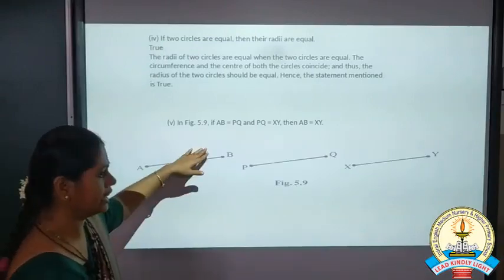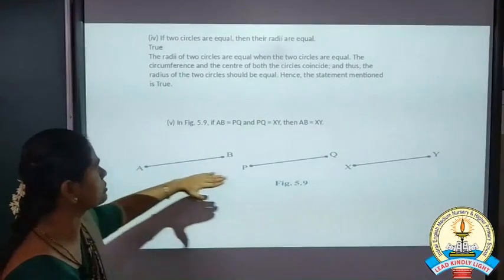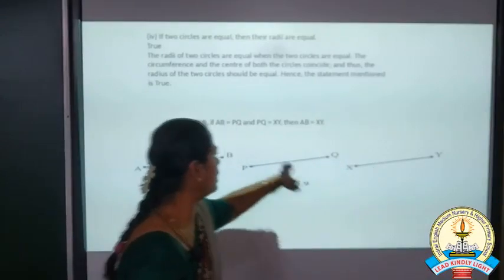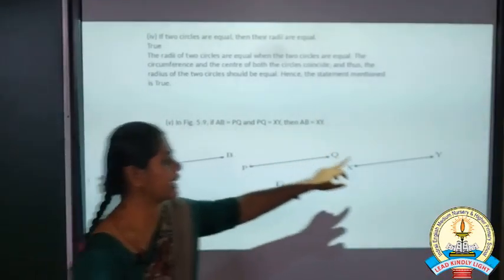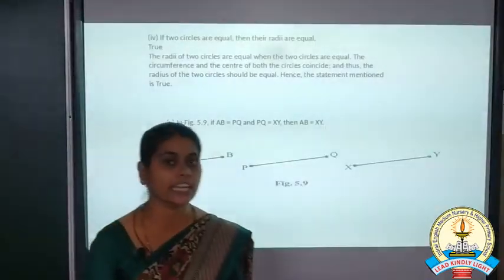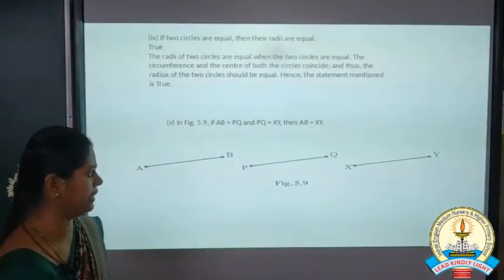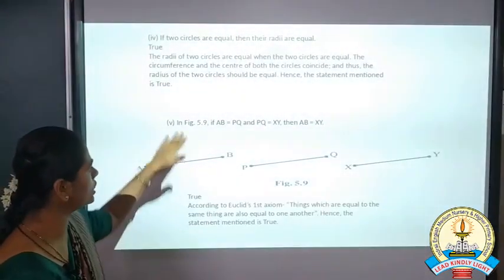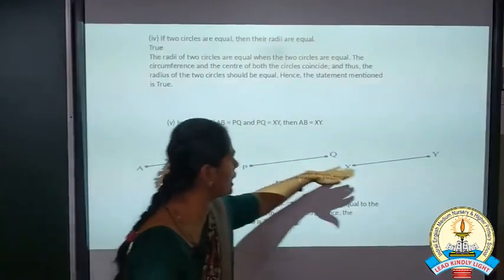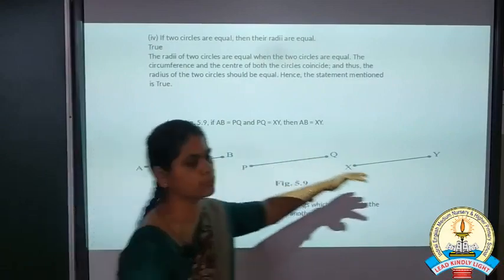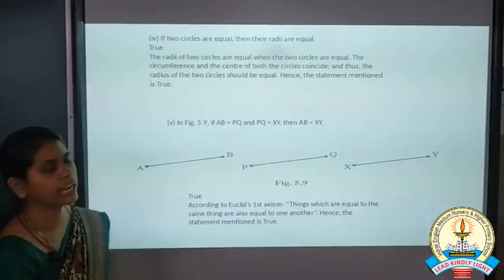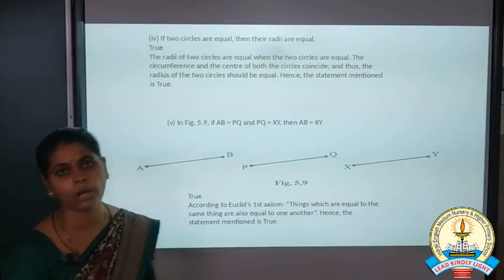The last statement: in the figure, AB equals PQ and PQ equals XY, then AB equals XY. This is your Axiom 1: things which are equal to the same thing are equal to one another. So this statement is true, because AB and PQ are equal, PQ and XY are equal, therefore AB and XY are also equal. So these are the statements for which we have to say true or false.